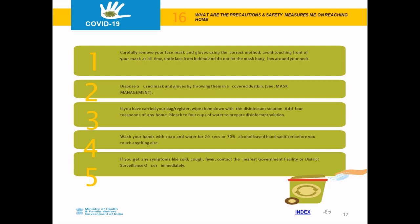Precautions and safety measures on reaching home: when you come back home to your family, it is important to prevent them from infection. Carefully remove your face mask and gloves using the correct method — avoid touching the front of the mask and untie lace from behind. Do not let the mask hang around your neck. Dispose of used masks and gloves by throwing them in a covered dustbin. Wipe down any bags or registers you carried with a disinfectant solution — add 4 teaspoons of household bleach to 4 cups of water to prepare the solution. Wash hands with soap and water for 20 seconds or use a 70% alcohol-based sanitizer before touching anything else. If you develop symptoms like cough, cold, or fever, contact the nearest government facility or district surveillance officer immediately.